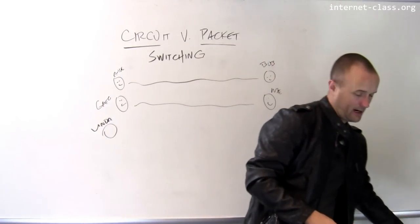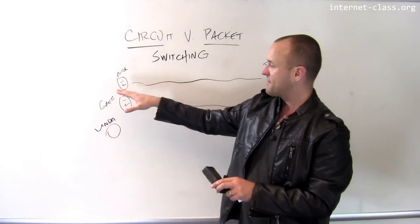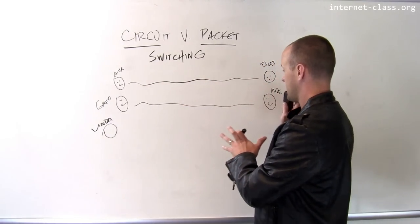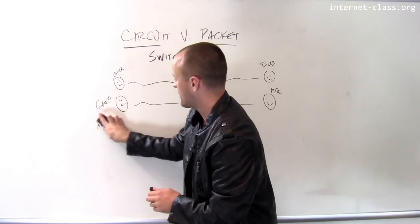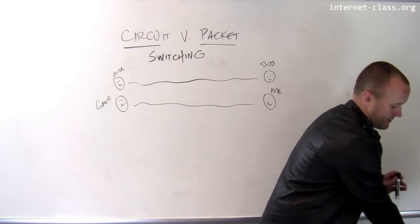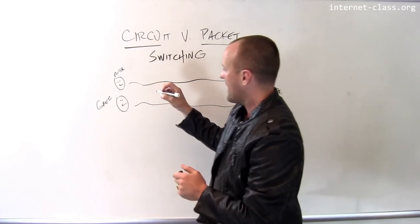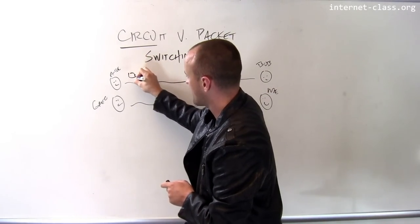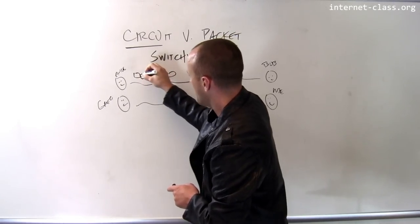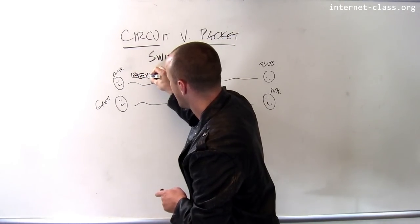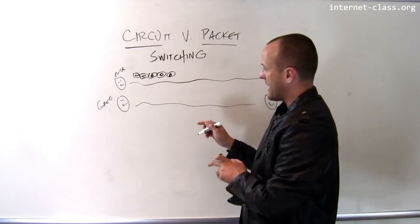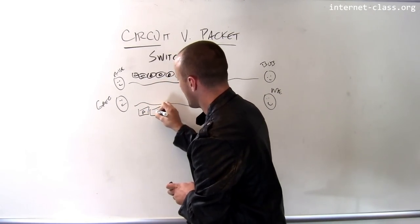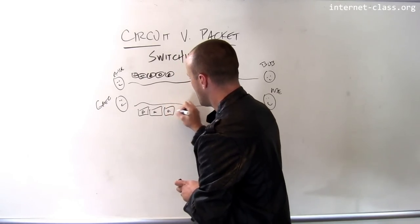Now, in contrast, how would this work on a packet switch network? Let's say we have the same two wires connecting these two pairs of people, but what's going to happen is that Alice's conversation, Alice's voice data, is going to be broken up into lots of little packets. We'll call these Alice's packets. And some of those packets can travel along this wire, but some of them can also be sent along this wire.